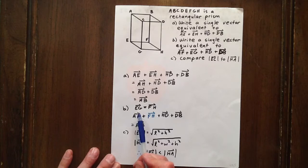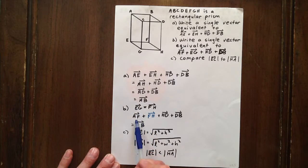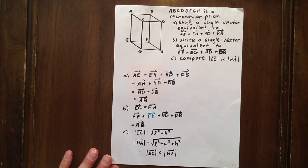So making this substitution, subbing in FH for EG, allows us to easily add those vectors.